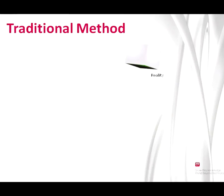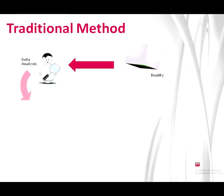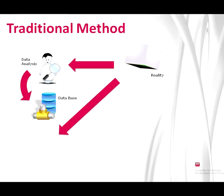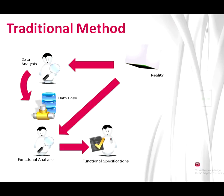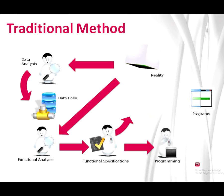In a traditional development methodology, the development process consists of two parts: the design of a data model implemented through a database manager, and the functional analysis, which generates specifications used to build the programs, whether through manual programming or using an interpreter or a generator.